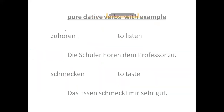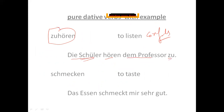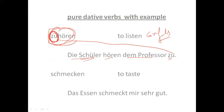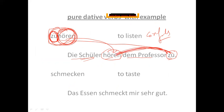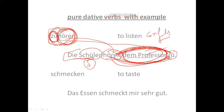Here are more examples. 'Zuhören' means 'to listen carefully' — it is a separable verb. For example, 'die Schüler hören dem Professor zu.' The prefix 'zu' goes to the end of the sentence. The students ('die Schüler') is the subject, 'zuhören' is the verb, and 'dem Professor' is the dative object. Separable verbs can also belong to the dative verb category.